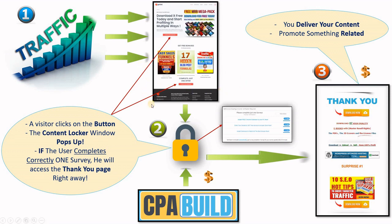A few things need to be set up before launching any traffic campaign. First, these two pages need to be created and published online. For this you can use a WordPress website or any template that you can customize and insert the content locker codes into. Most free website platforms or website builders will not allow you to add codes in specific sections, so it is better to use self-hosted templates. If you know any website builder that allows you to add codes in the head section, please leave it in the comments.